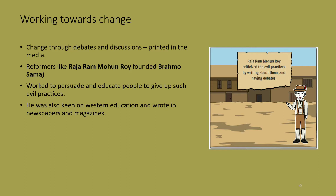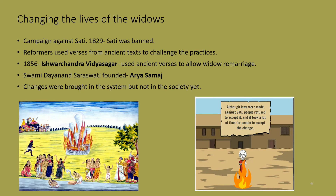Raja Ram Mohan Roy was one such reformer who was at the forefront of these social changes. He formed a reform organization called the Brahmo Samaj in Calcutta and was keen on spreading the knowledge of western education. He particularly wanted the conditions of widows to improve, and so he began a campaign against Sati, challenging people's beliefs by showing them ancient texts and their meanings. In 1829, Sati was finally banned.